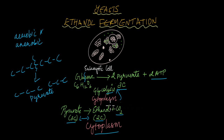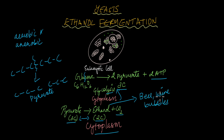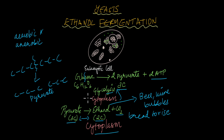The ethanol produced is what is needed in the brewery industry to make beer, wine, etc. The carbon dioxide produced is why you see bubbles in the process of making beer and wine. This carbon dioxide is also what causes bread to rise when using yeast to bake bread. This entire process of ethanol fermentation takes place in the cytoplasm itself — no other cell organelle is involved, as all enzymes needed are found in the cytoplasm.